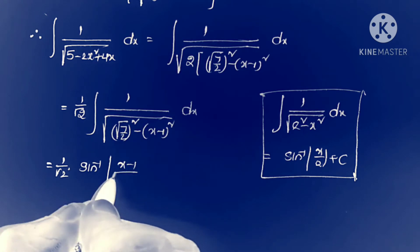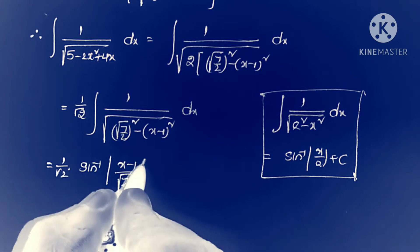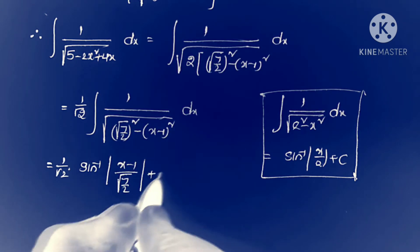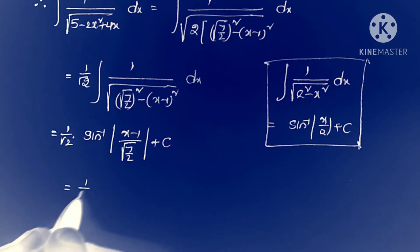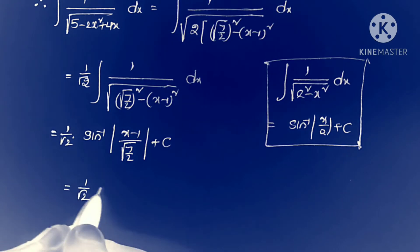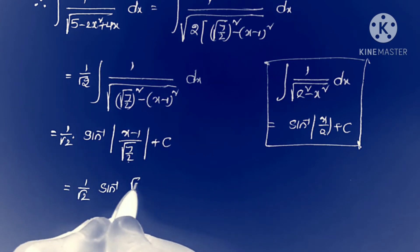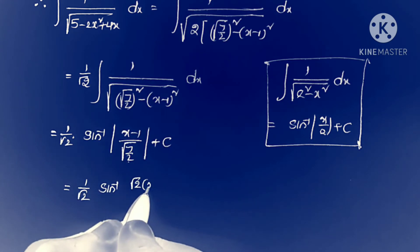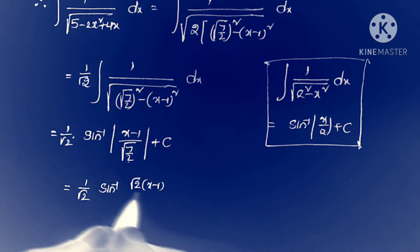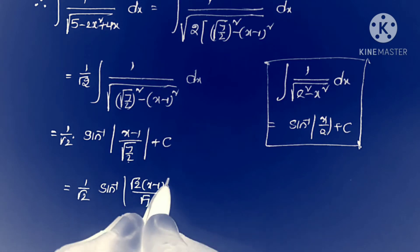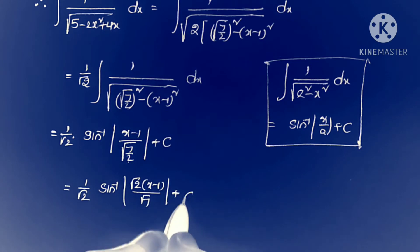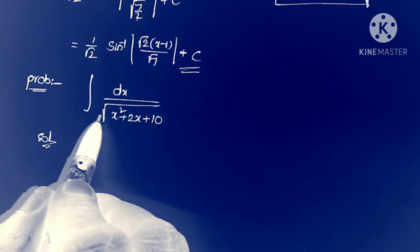The answer is 1 by root 2 into sine inverse of root 2 times (x minus 1) by root 7, plus c. That's all — this is the answer. Next problem: integral dx by square root of x squared plus 2x plus 10.